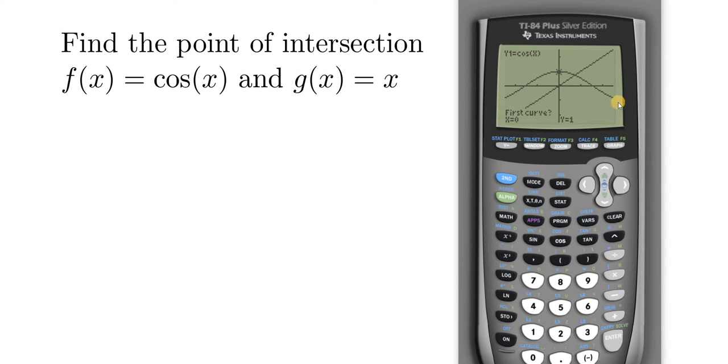And it says first curve, and it looks like it has us on the cosine graph. So that seems okay. So let's hit enter. Second curve - looks like it has us on the other graph, y₂ = x. Let's hit enter. It wants us to guess, I'm just going to hit enter. Boom. And there is the fixed point on the graph - the fixed point is the x value. And that is the point of intersection.